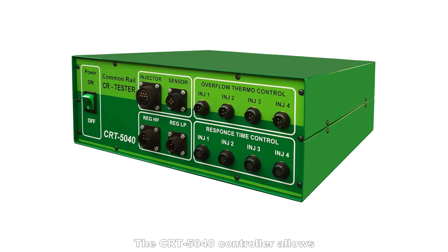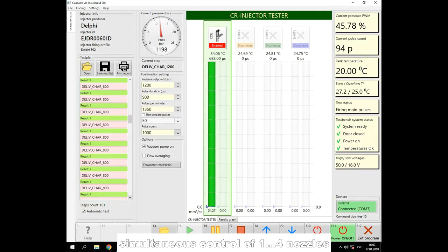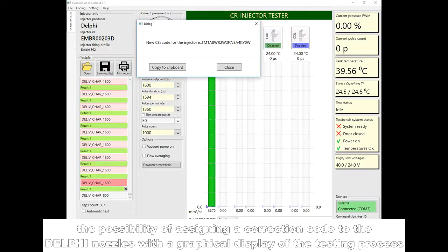The CRT5040 controller allows simultaneous control of one to four nozzles, the possibility of assigning a correction code to the Delphi nozzles with a graphical display of the testing process.